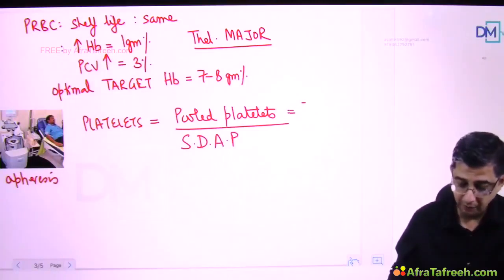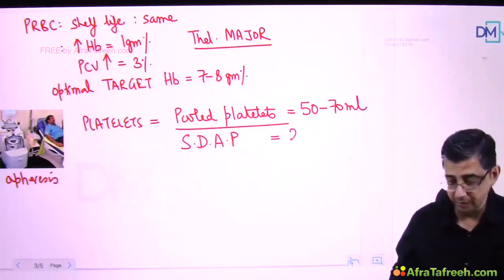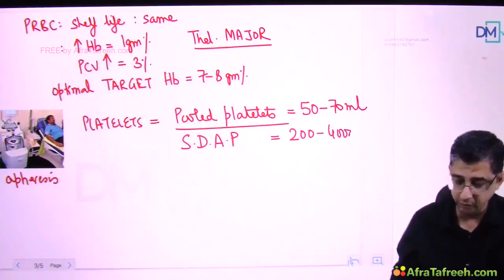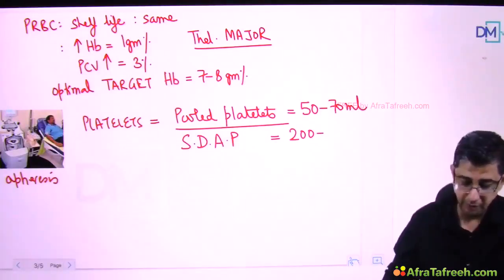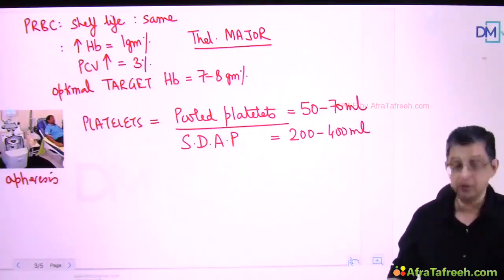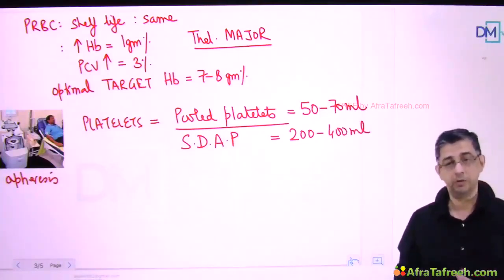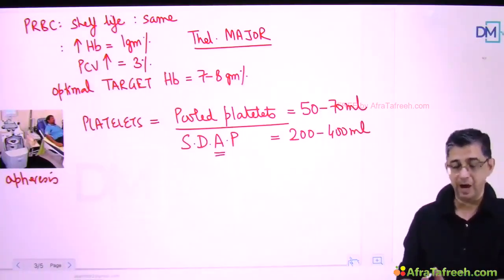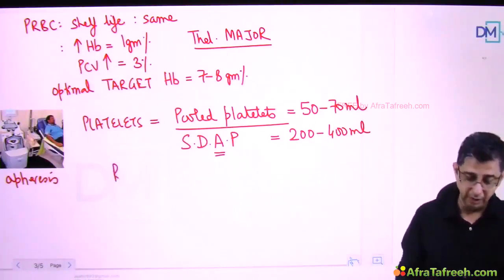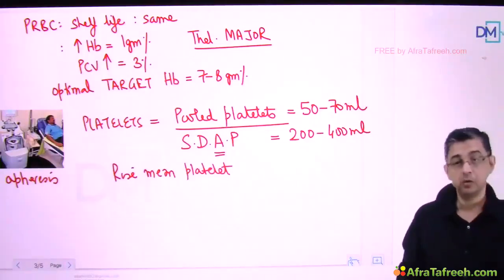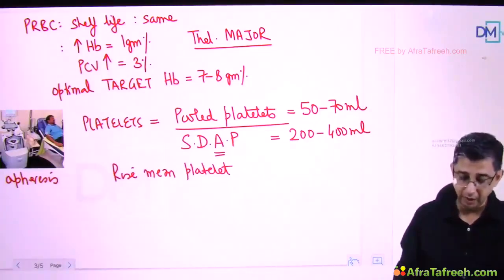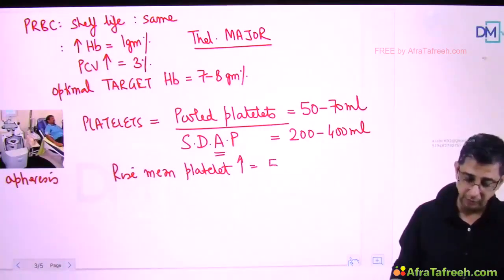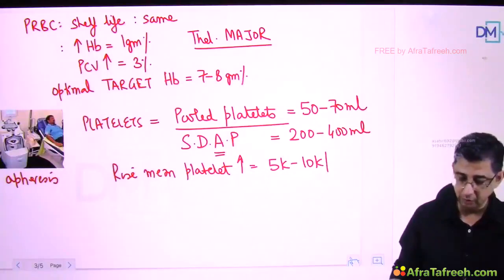The bag containing pooled platelets has a volume of about 50 to 70 ml. Single donor apheresis platelets have a bag volume of about 200 to 400 ml. That may give the impression that the apheresis bag has more platelets - but that is not the case. The larger volume includes plasma components. Harrison states that the rise in mean platelet level in the blood is between 5,000 to 10,000 platelets per cubic millimeter for both.